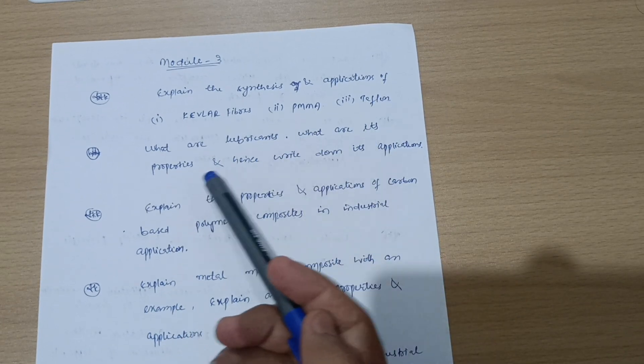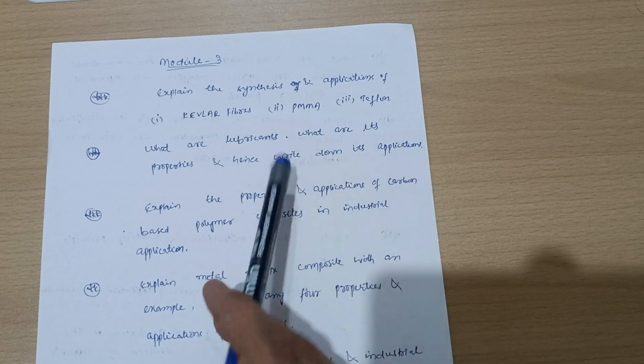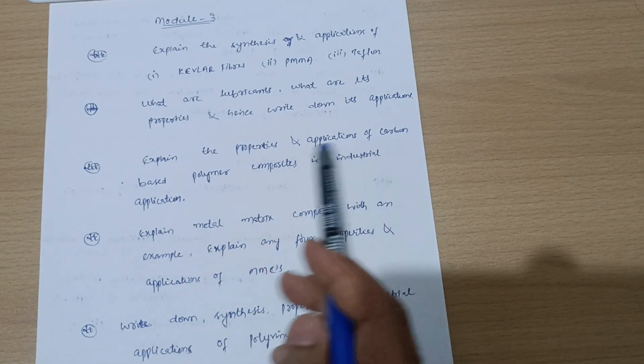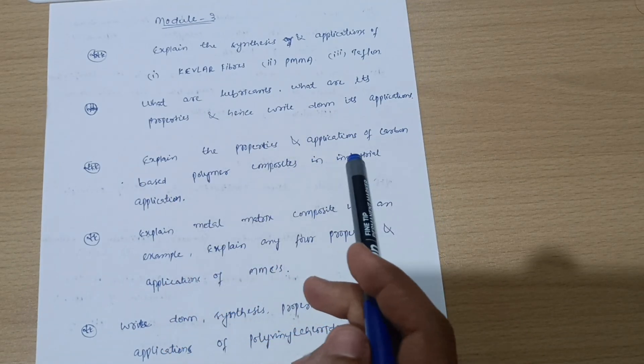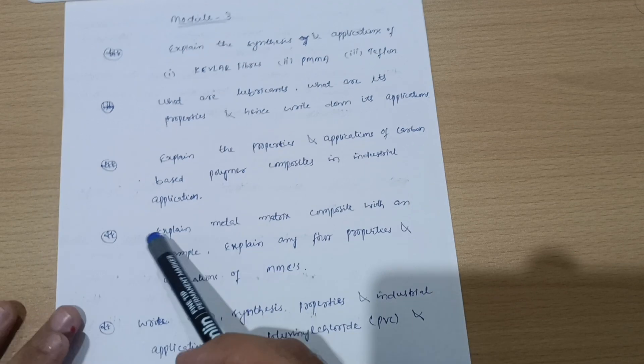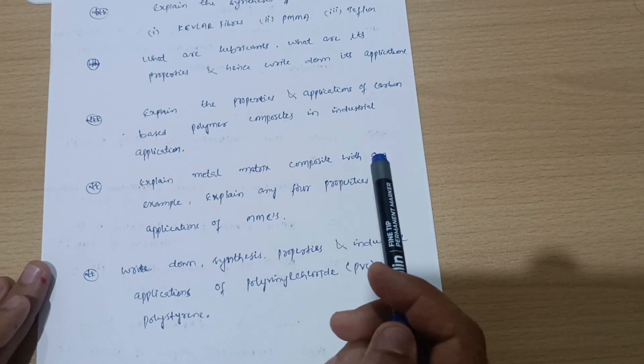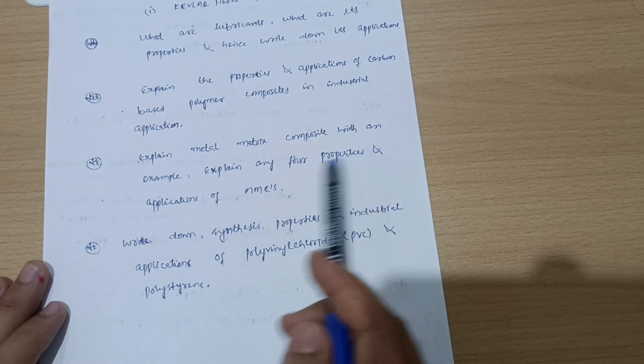Now let me conclude with Module 3. Explain the synthesis and applications of Kevlar fibers, PMMA, and Teflon. What are the lubricants, what are its properties, and hence write down its applications. Explain the properties and applications of carbon-based polymer composites in industrial application.